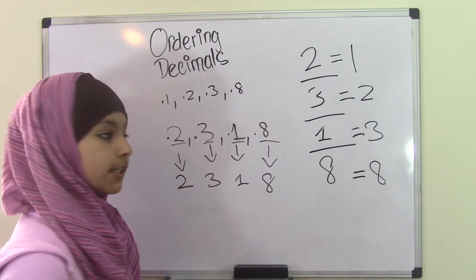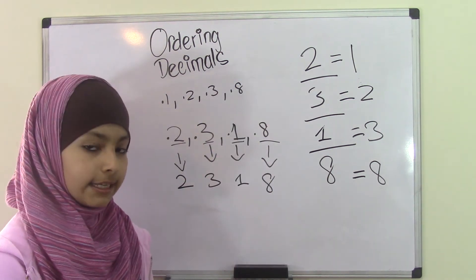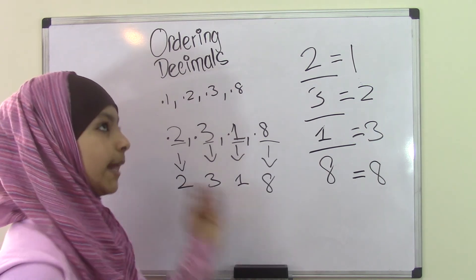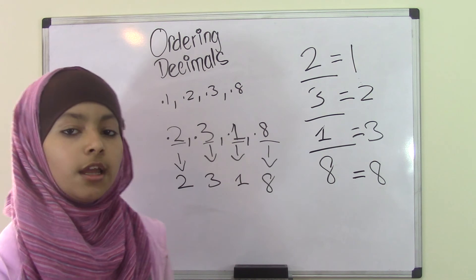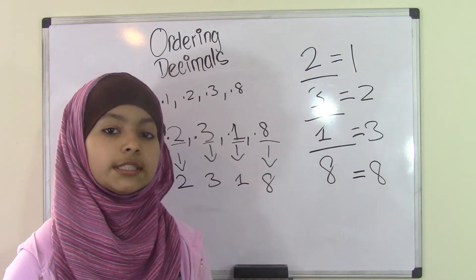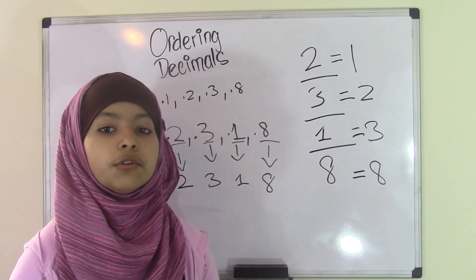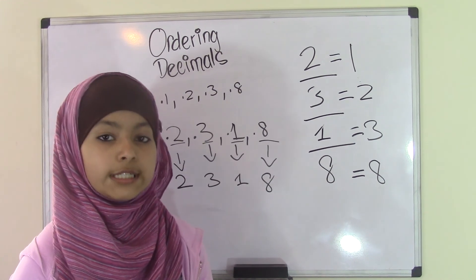You can always add zeros in front of the decimal point if you want, but that's not necessary because it does not change the place value of that number. If you need to understand this topic more, please visit our website at www.broandsismathclub.com where you will find more examples of ordering decimals.